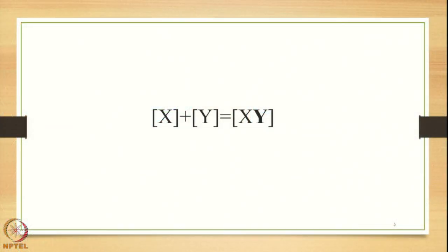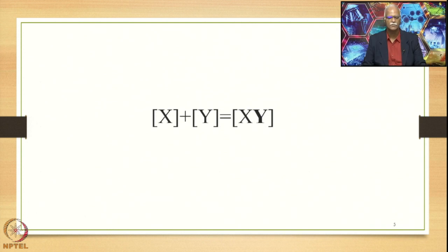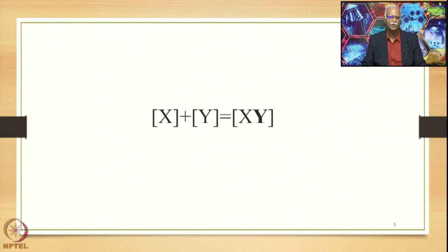The formation of Tatpurusha Samasa can be put in the form of a simple equation as shown below. If we have two entities X and Y with independent and separate status in terms of meaning, word form, and accent, and they are interlinked by meaning, the speaker of Sanskrit decides to merge them together and bring out an output in the form of XY — one entity with one meaning, one word form, and one accent.